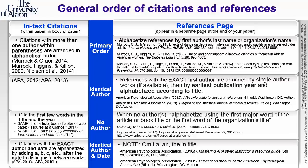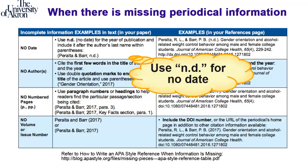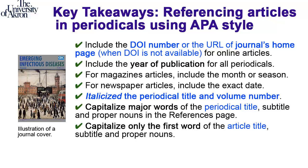Remember the differences in placement and order of citations in the text and in the references page. APA has recommendations to help us when there is missing citation information. What is unique about citing periodicals is that these publications have two titles: the article title and the periodical title. For journal articles, italicize the periodical title and the volume, and whenever possible include the DOI number. For journals, the retrieval date is not necessary.